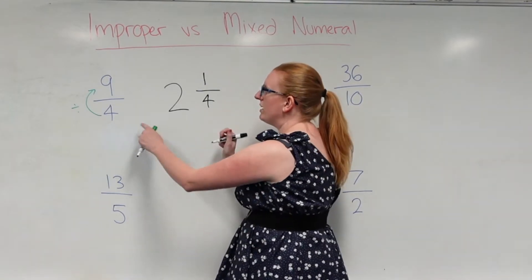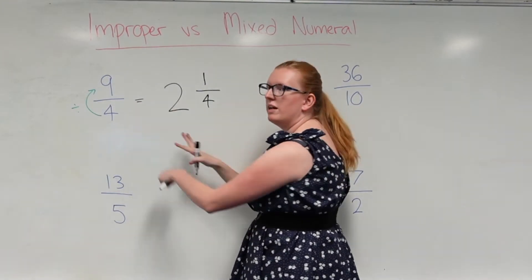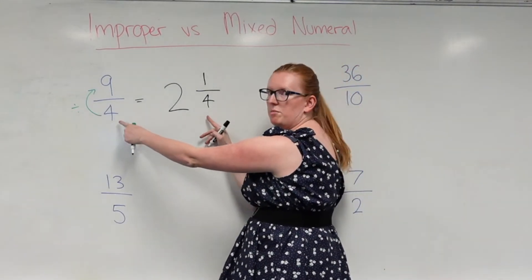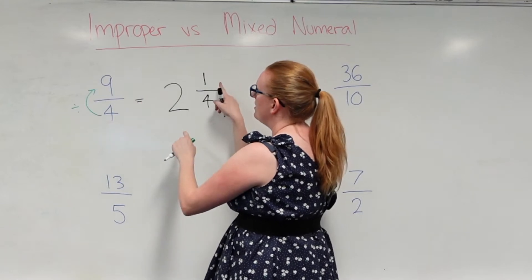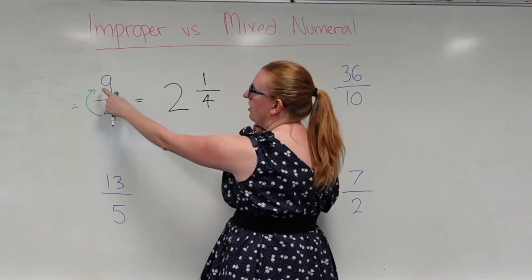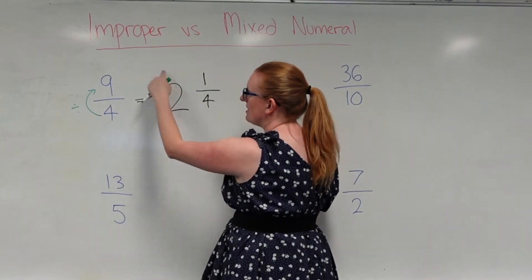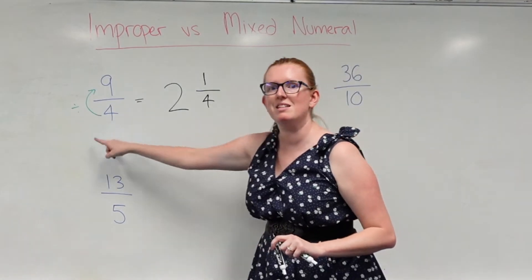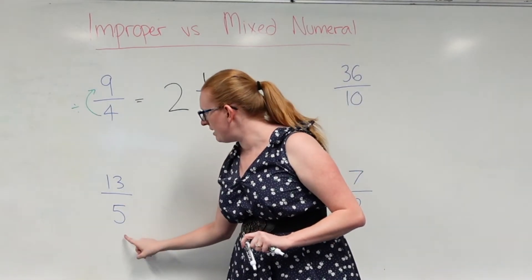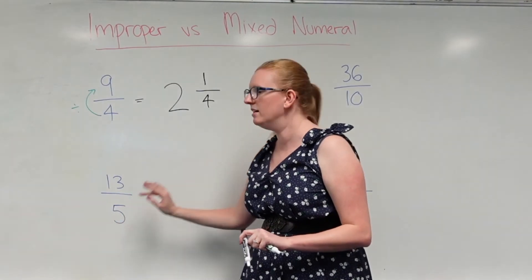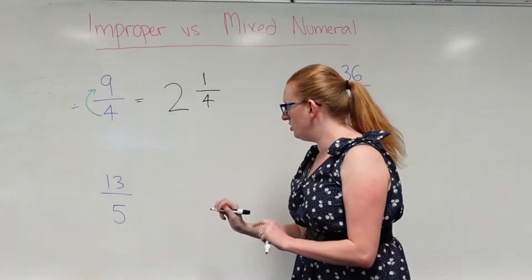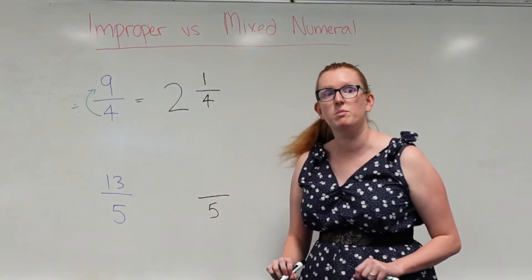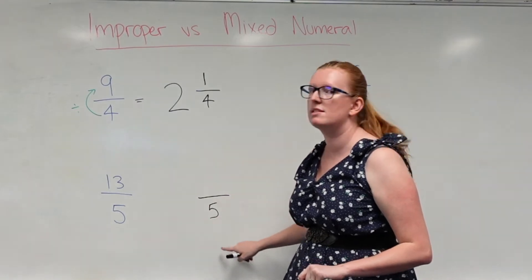When converting between improper and mixed numeral fractions, your denominator always stays the same. The only thing changing is instead of having the big number on top, we're turning it into whole numbers out the front and the remainder goes on top of the new fraction. So straight away, before I even do any solving, I know that the denominator of my next fraction is still going to be five. Keep that in mind — your denominator stays the same.